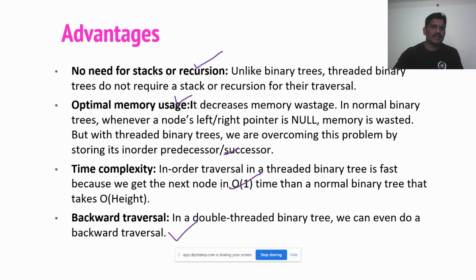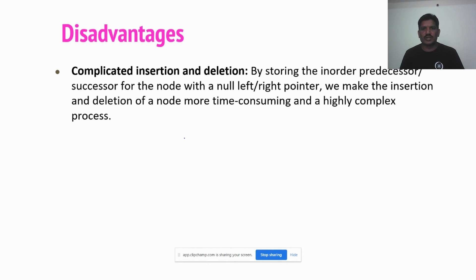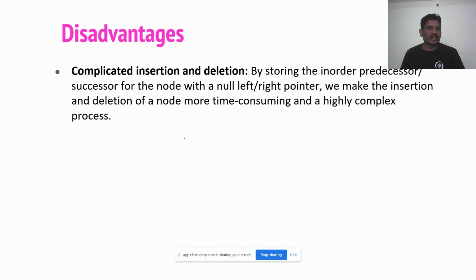There are also some disadvantages of the threaded binary tree. Insertion and deletion are complex — it is complex to insert or delete data from the threaded binary tree because finding the node is time-consuming and a highly complex process. These are some of the disadvantages of the threaded binary tree. In this session, I explained what is threaded binary tree, the two types — single threaded and double threaded — and how to represent each.